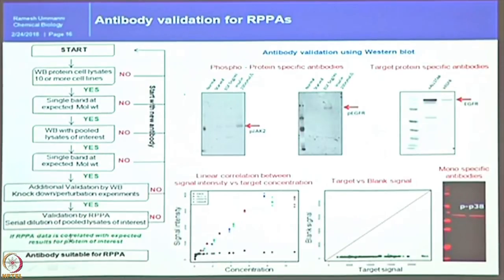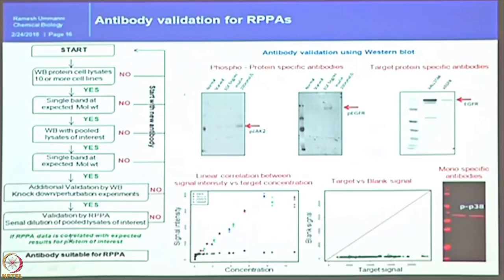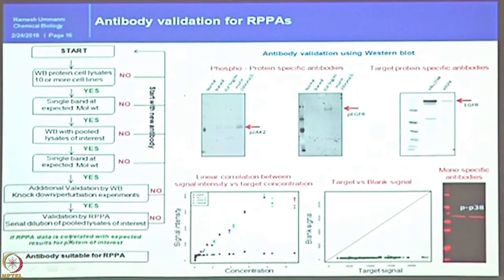After the knockdown experiment, antibodies are validated by reverse phase protein array. A small pool of lysates is printed on glass slides, the antibody is probed, and signals are checked. When plotting concentration versus signal intensity, the signal should increase with concentration while blank signal stays at base level. The target signal versus blank signal ratio must show linearity; if the target signal is too close to blank signal, the antibody must be dropped.